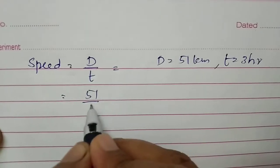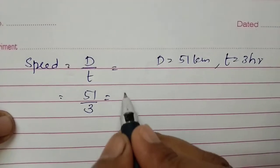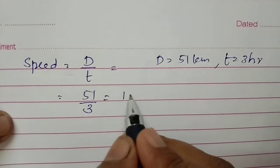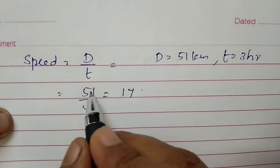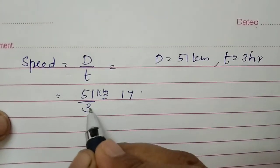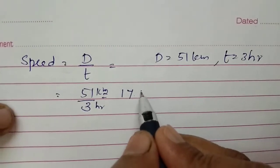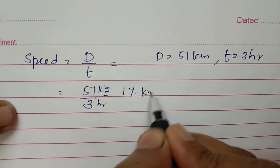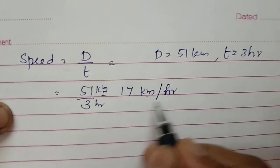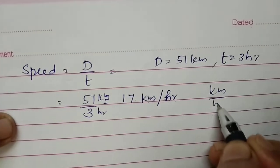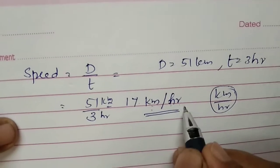So you can write 51 divided by 3. We divide: 51 by 3 gives 17. Distance is in kilometers and time is in hours, so the unit will be kilometers per hour — that is, 17 kilometers per hour.